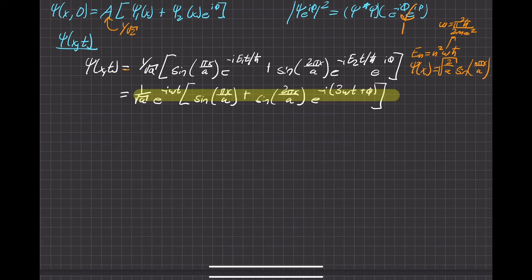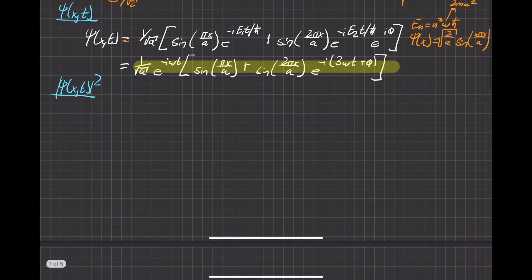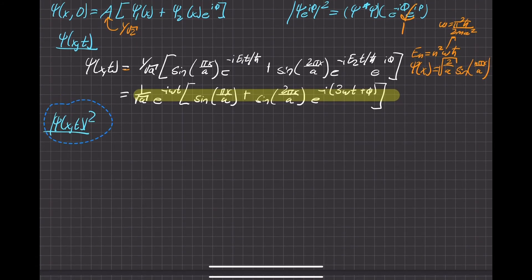As you can see, the biggest thing is that the phase just kind of gets tacked on to this exponential over here. So it's a hint that it's going to be like a phase shift whenever we do the next portion, which is finding the magnitude squared of the wave function.